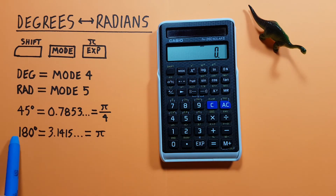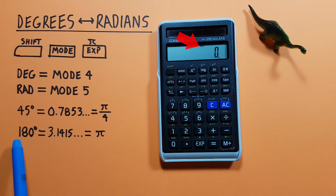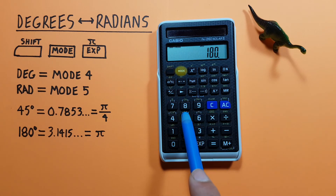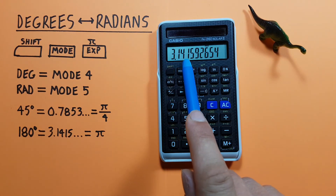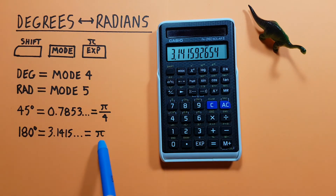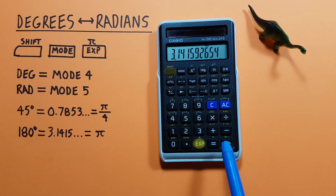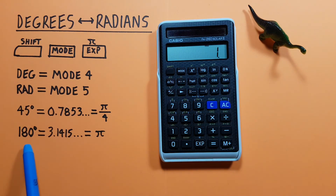Let's look at another example: 180 degrees. Since we're already in degrees mode we can enter our 180. Then we press shift mode 5 for radians mode and see this gives us 3.1415 etc., which should be familiar. If we want to simplify it we can divide that by pi, and we get a result of 1. So 180 degrees is equal to pi.